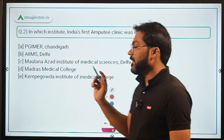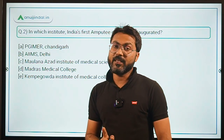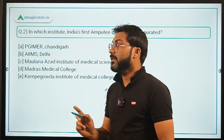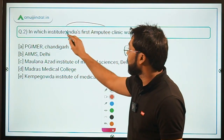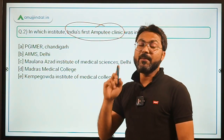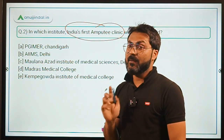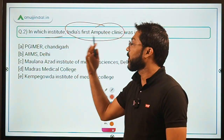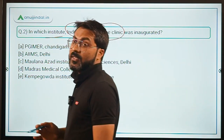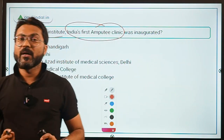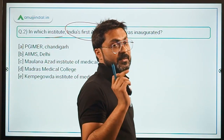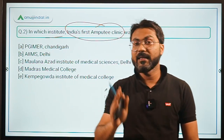Question 2 can be asked as a one-marker in the ESI section and is a very important question because it talks about India's first amputee clinic being established. The question asks in which institute it has been established, and this is a question you can expect in your exam.